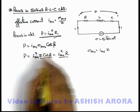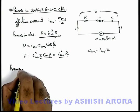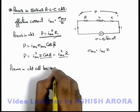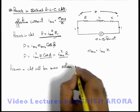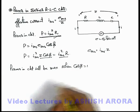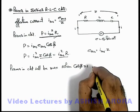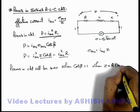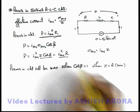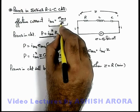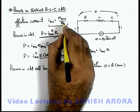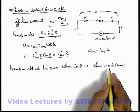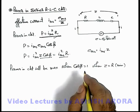That is why we directly write the power consumed by a circuit as the total average power consumed by all the resistances of the circuit. Power in the circuit will be maximum when the value of cos φ is 1. We know cos φ equals 1 when Z equals R, which is the minimum impedance of the circuit. Since I_rms equals E_rms divided by Z, when Z is minimum, I_rms will be maximum, and correspondingly the power in the circuit will also be maximum.